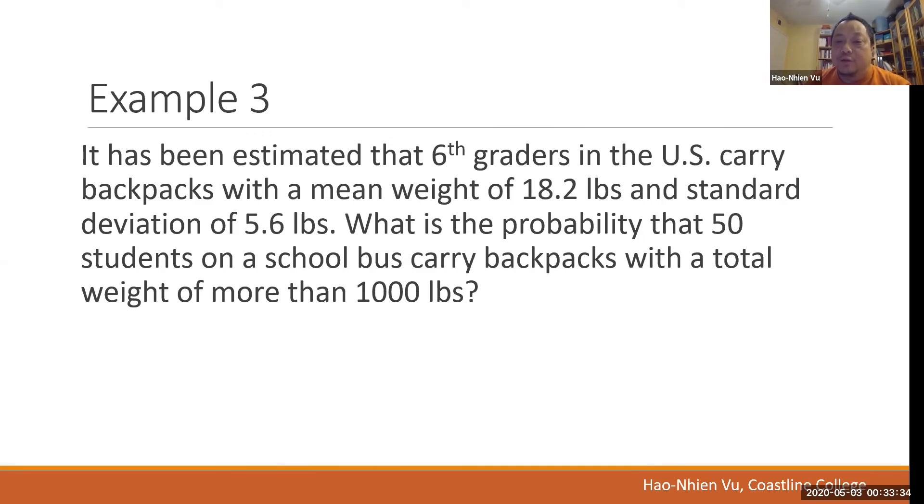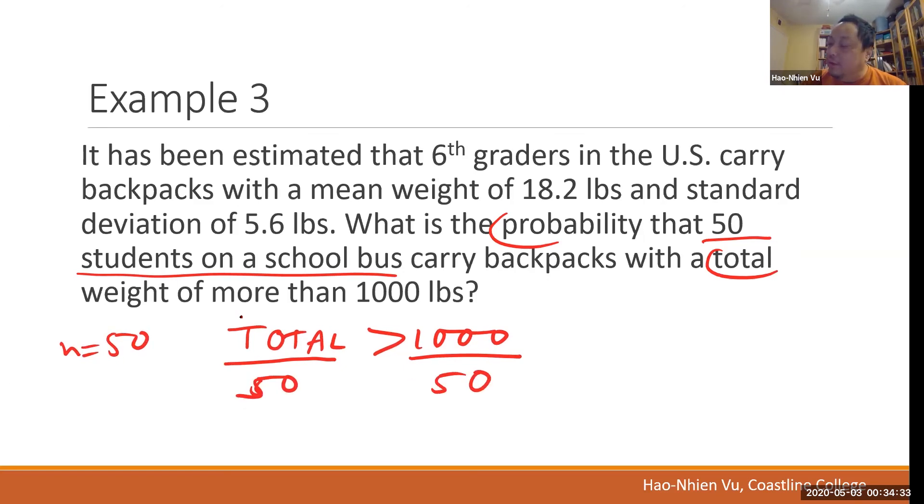This is a CLT problem because we have a group of 50 students and the prompt is the probability that the total is over 1000 pounds. But total greater than 1000 is the same as if I divide both sides by n and n is equal to 50. If I divide both sides by 50, it is equivalent to saying that mean is greater than 20. So this is still CLT. You need to check the conditions. You need to compute the new standard deviation and apply it to the normal function to solve for the probability of x bar being greater than 20. And once you get that probability, you write the verbal answer in context. Hope that helps. Thanks for watching. Bye.